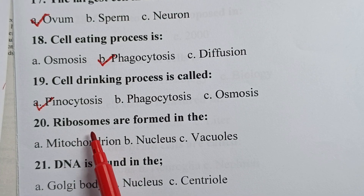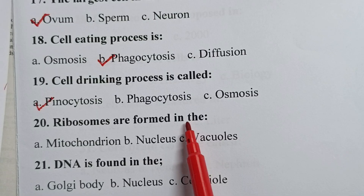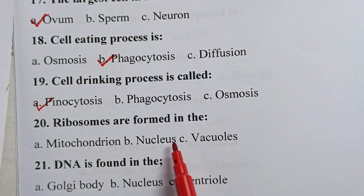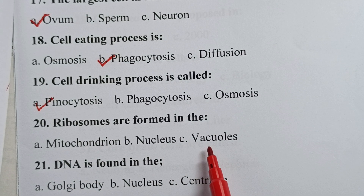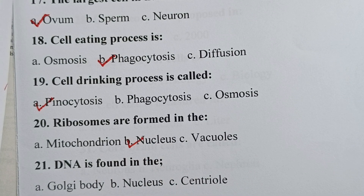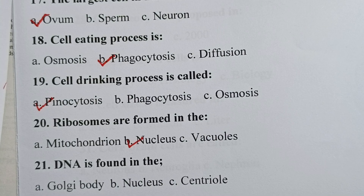Question twenty: ribosomes are formed in the — is it mitochondrion, nucleus, or vacuole? Your correct answer is nucleus. Ribosomes are formed by the nucleolus, which is an organelle located inside the nucleus.